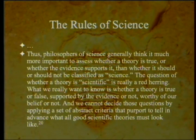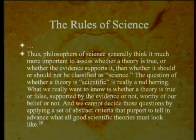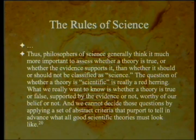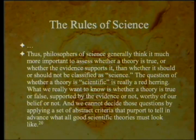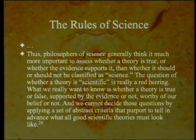Philosophers of science generally think it much more important to assess whether a theory is true, or whether the evidence supports it, than whether it should or should not be classified as science. The question of whether a theory is scientific is really a red herring. What we really want to know is whether a theory is true or false, supported by the evidence or not, worthy of our belief or not — and whether it can make predictions. We cannot decide those questions by applying a set of abstract criteria that purport to tell in advance what all good scientific theories must look like.